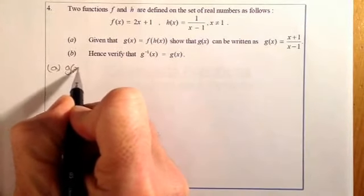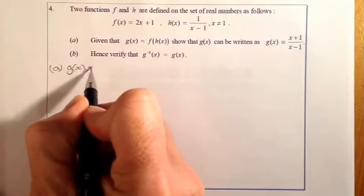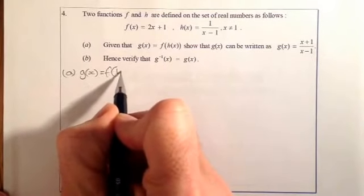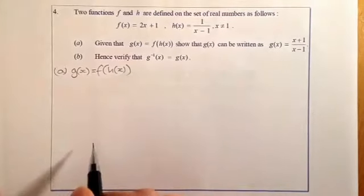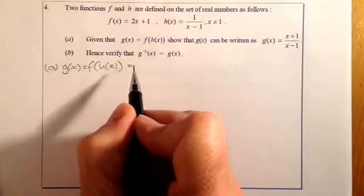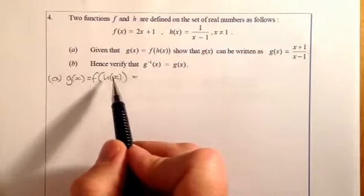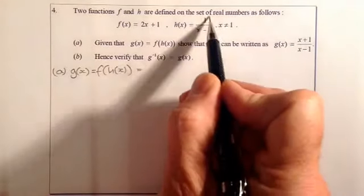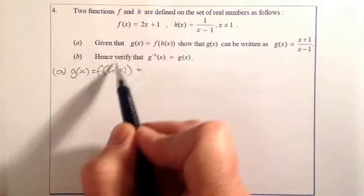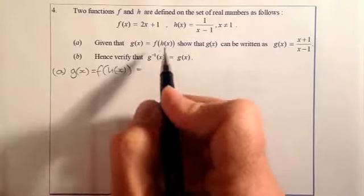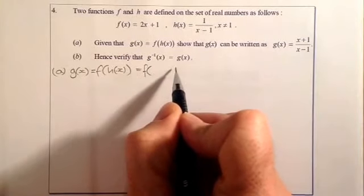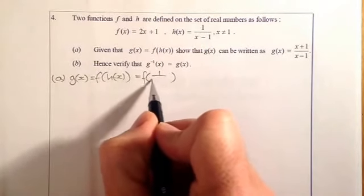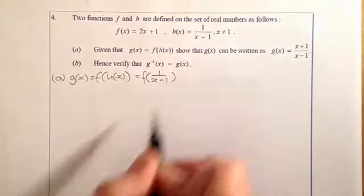So g of x is going to be equal to f of h of x — that's now a composite function. What I'm going to do is substitute the h of x function into that bracket. So whatever I've got in h of x, I'm going to put in there. There's the f, there's the open bracket, and instead of h of x, put in the function.